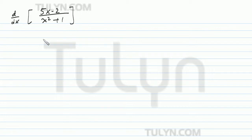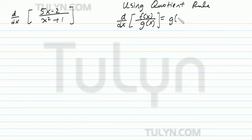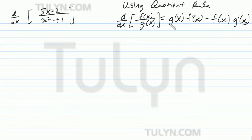Now, recall, whenever you're using the quotient rule, the quotient rule is as follows. You're finding the derivative of 2 functions dividing — we've got 1 function divided by another function. And then you're going to go ahead and do g of x times f prime of x minus f of x times g prime of x divided by g of x squared.